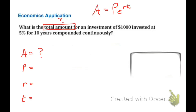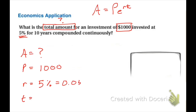P stands for principal — our original investment is one thousand dollars. Our rate is five percent, which we convert to a decimal: 0.05. And we're investing for ten years. I suggest always starting by writing this out and identifying what information you have.